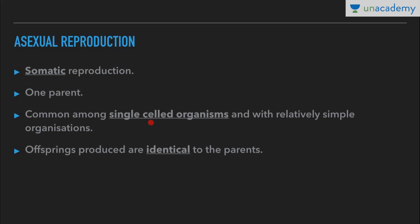Asexual reproduction is common among single-celled organisms and those with relatively simple organizations. So organisms that are single-celled, or some plants and animals with relatively simple organizations, can be seen reproducing by asexual means. And as the organization becomes more and more complex, it shifts to sexual reproduction. So asexual reproduction is the reproduction of organisms with simpler organizations.